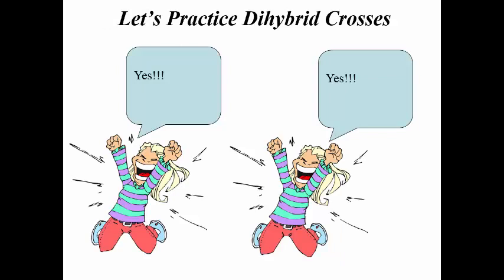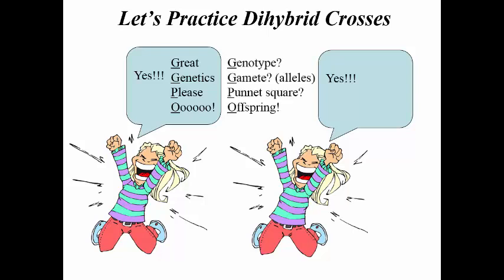Let's go ahead and do a practice dihybrid cross. In a previous video, Transmission Genetics 1, I showed you a mnemonic to remember how to go about a genetic cross — the sentence 'Great Genetics Please Oo.' It stands for: first, figure out the genotypes of the individuals involved; second G for genetics, figure out what gametes they produce (what sperm or egg do they produce); P is Punnett square — go ahead and draw it; and 'Oo' — we're having the offspring. For a dihybrid cross, you just do this procedure twice, once for each generation.